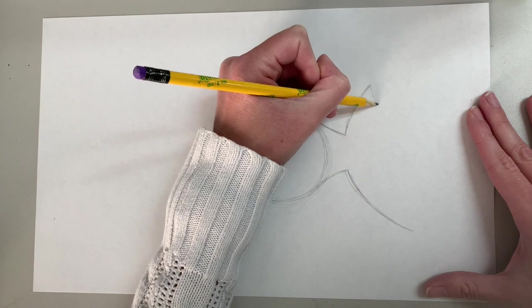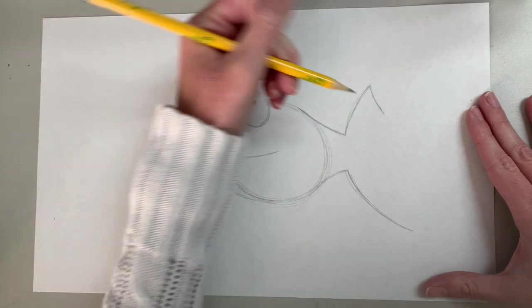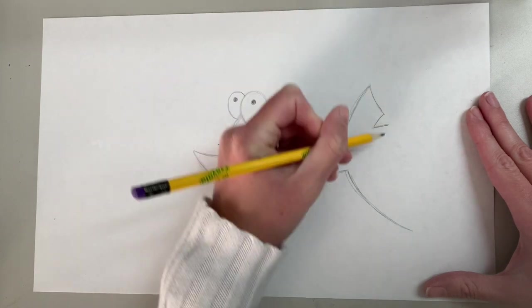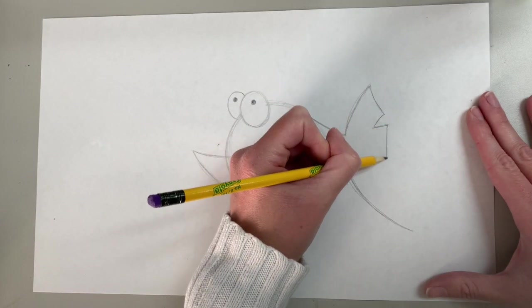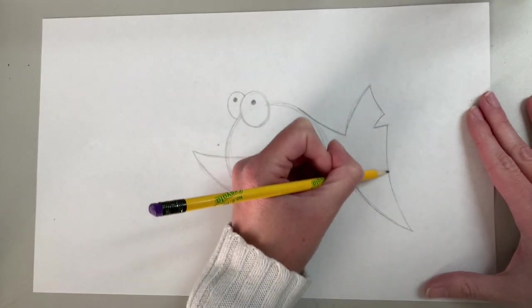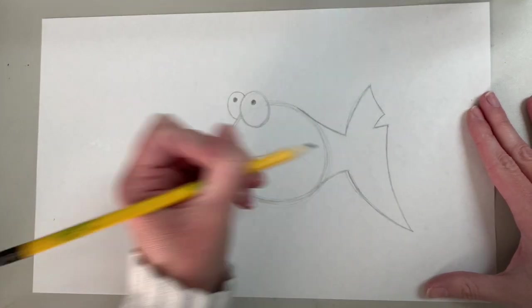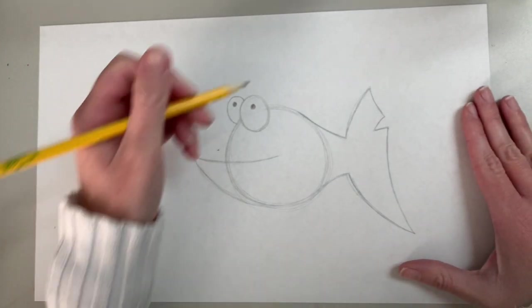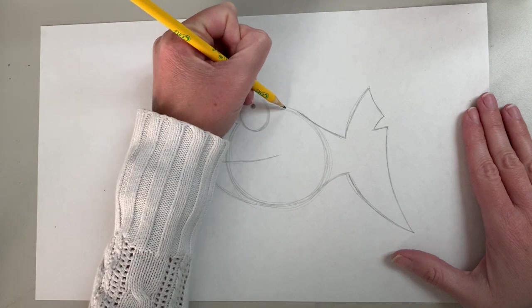So we're going to have a straight line here, a little V, and then we're going to connect this line down with this one. There's our big tail fin for our fish. Then we're going to come up here and we want to give him a nice fin on the top of his back. So it's going to go over and then curve down and meet on the top of our circle.